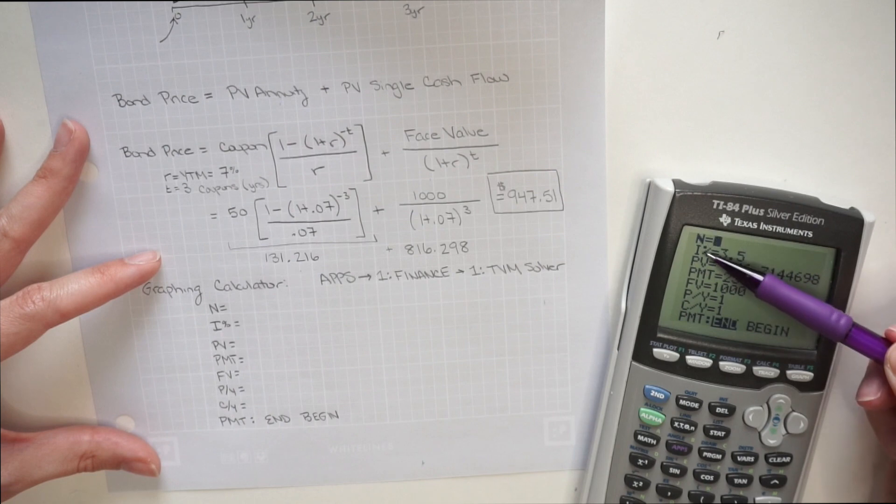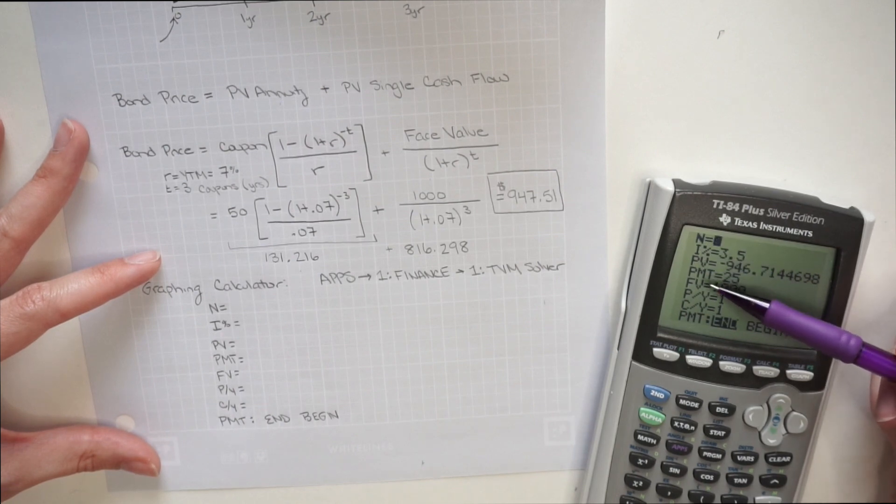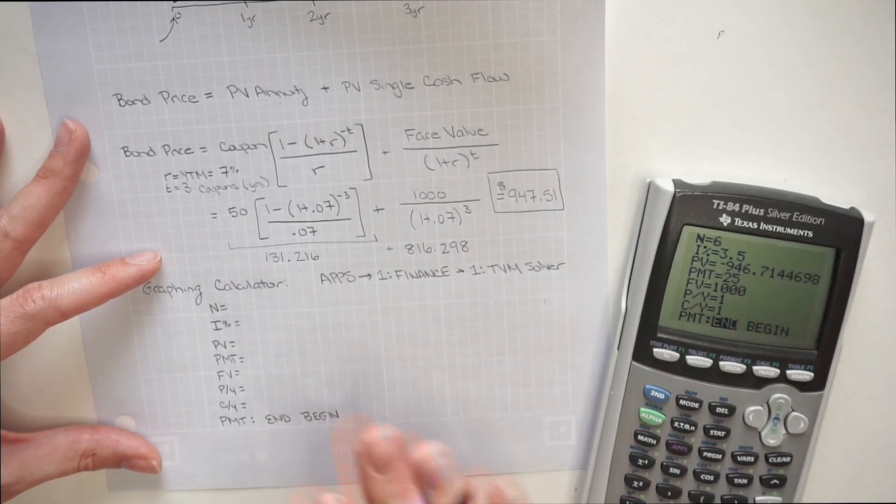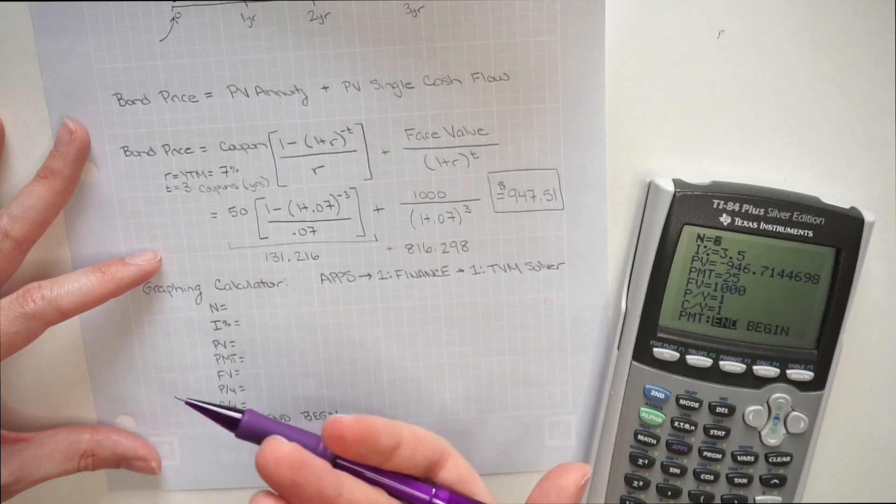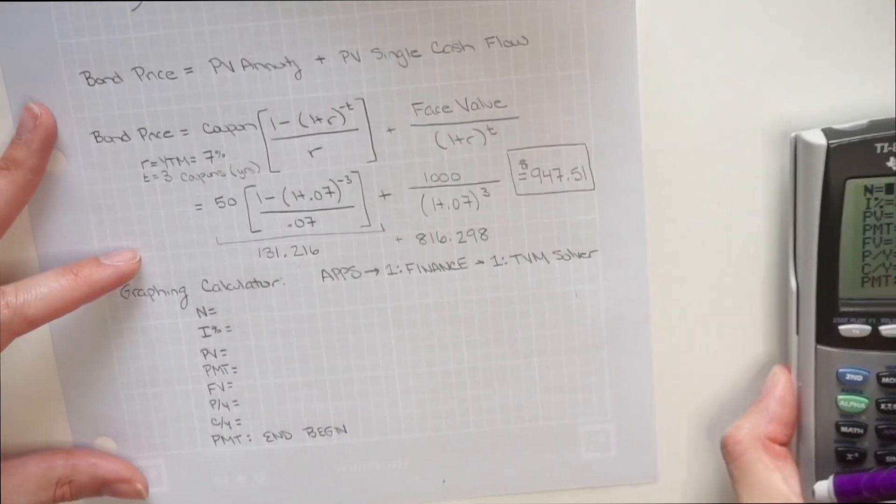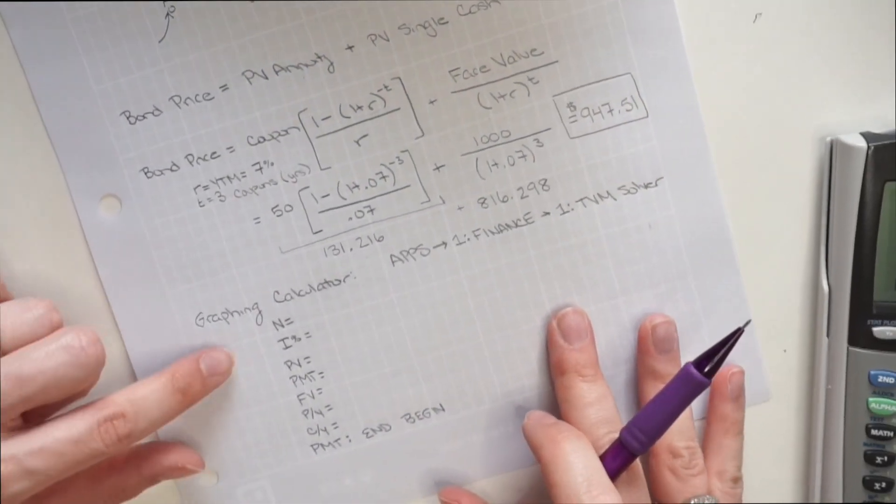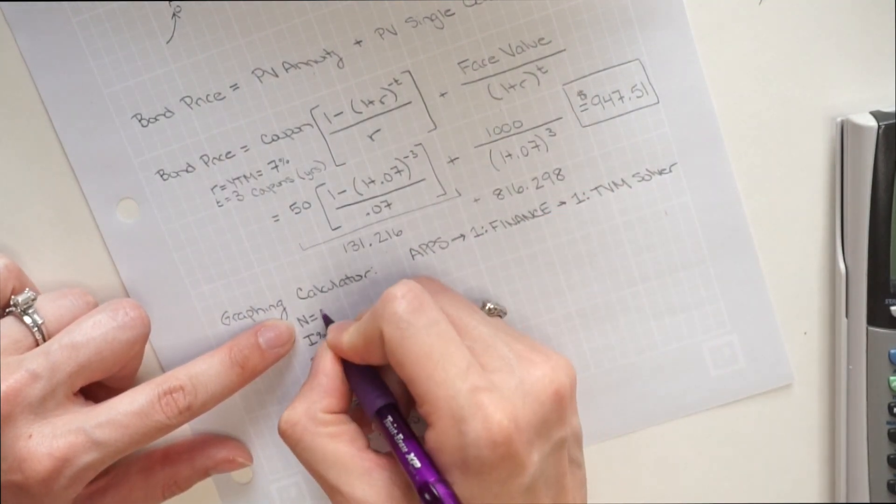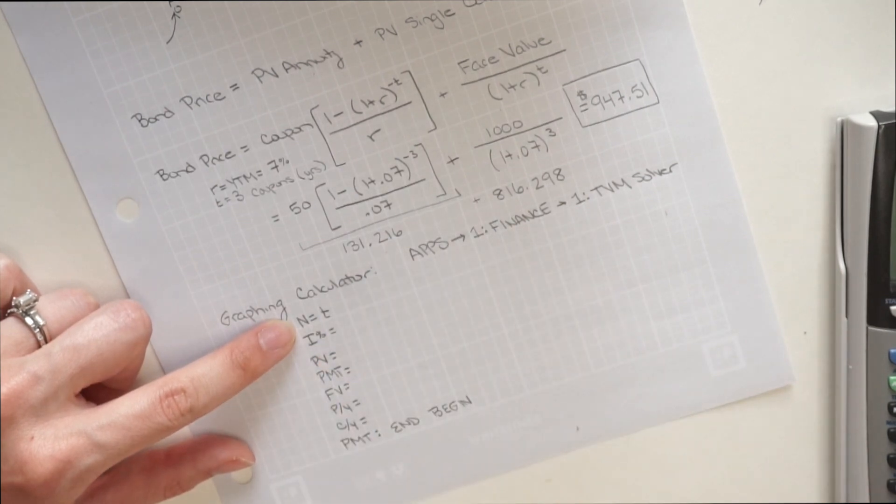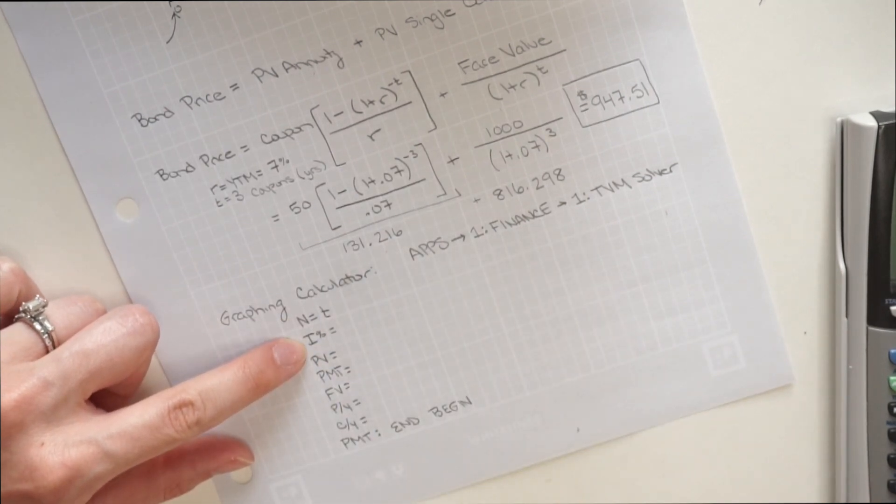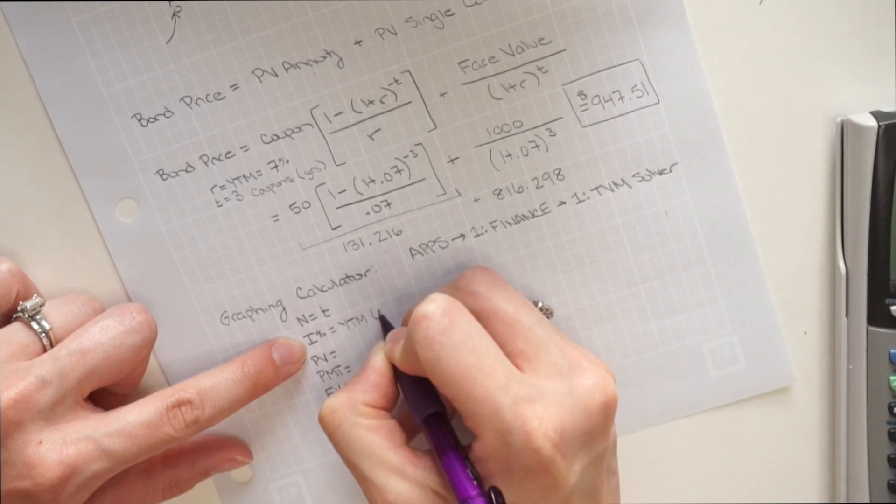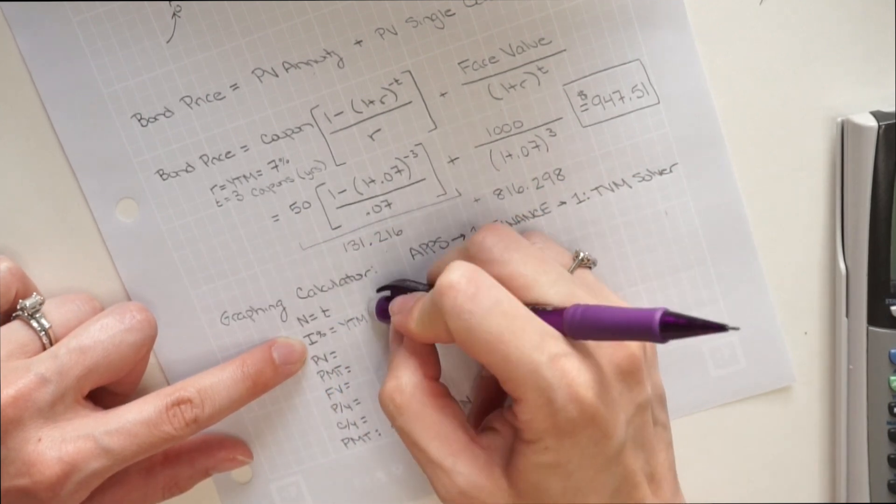So I have an N, an I, present value, payment, future value, payments per year, compounds per year, and then beginning or end. So for a bond, let's figure out what each one of these means. N is going to be just like your T in the equation up here. Then your I percent, that's going to be your yield to maturity, or like your R in the equations above.